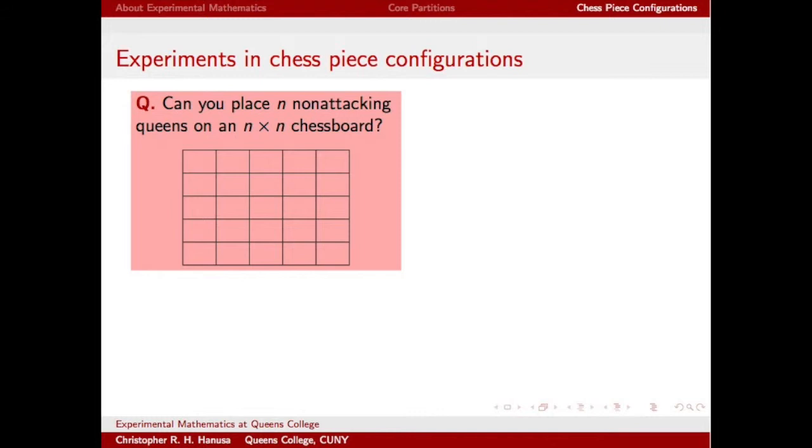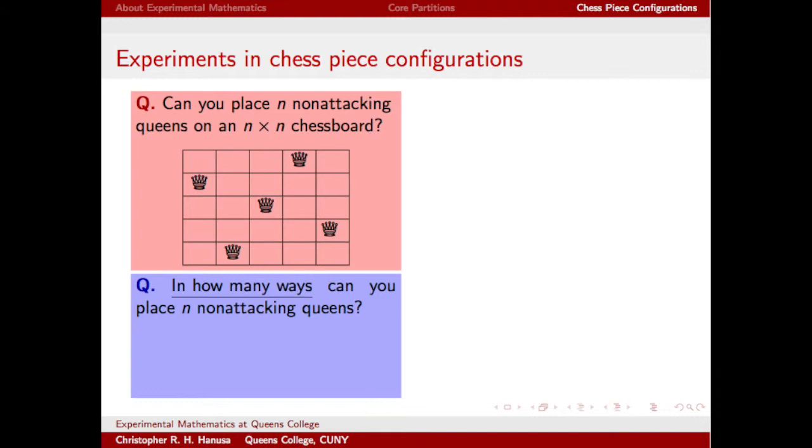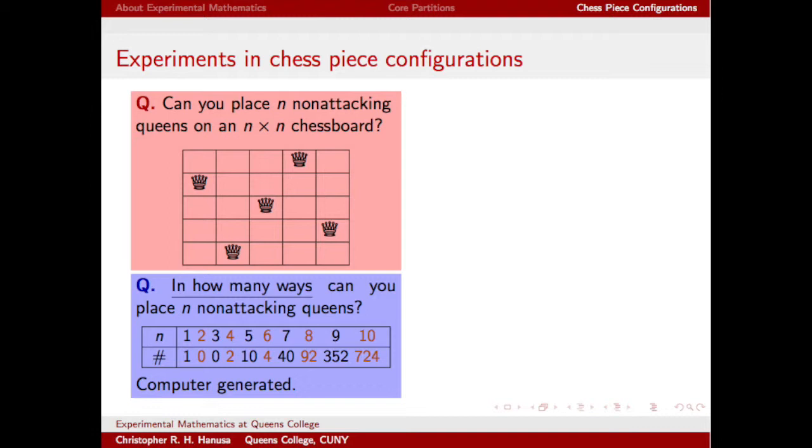So, we can then ask, in how many ways can you place n non-attacking queens? Well, we can use our computer to generate data to find this sequence of numbers. For instance, a classic computer science homework question asked students to show that there are 92 ways to place 8 non-attacking queens on an 8x8 chessboard. But computer algorithms can only take us so far. It would take a computer an impractically long time to give the answer for even a 100x100 board.